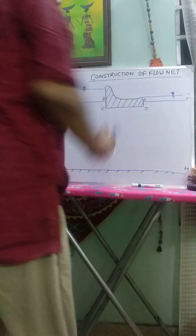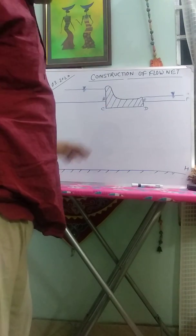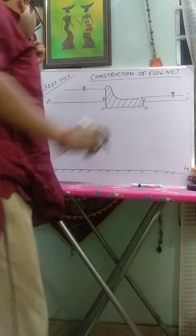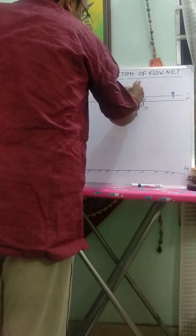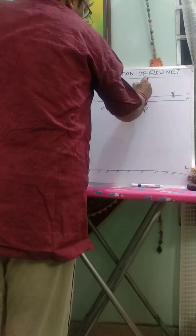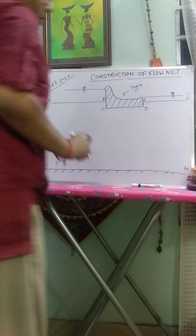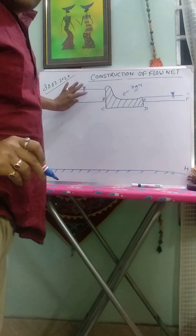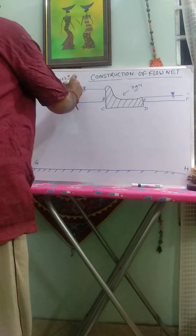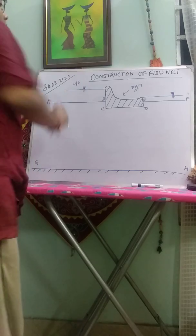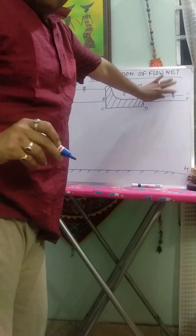Let me draw a flow net. This is a dam. This is the river upstream side and this is the river downstream side.